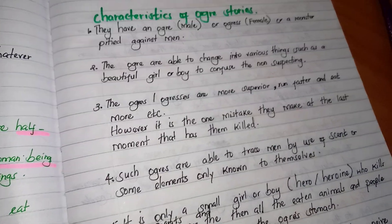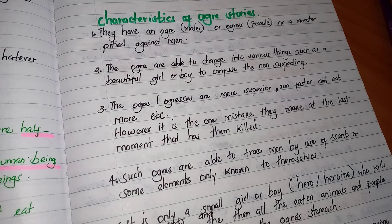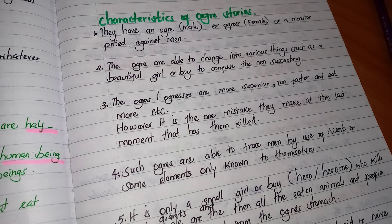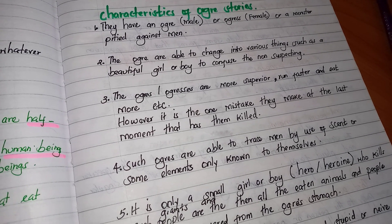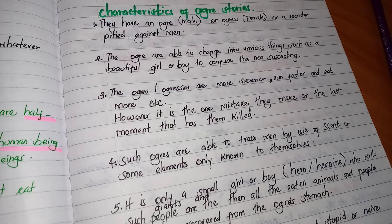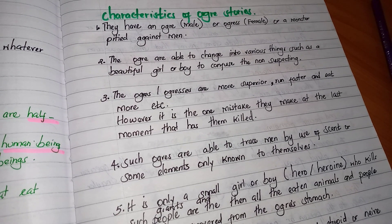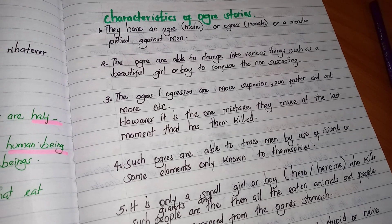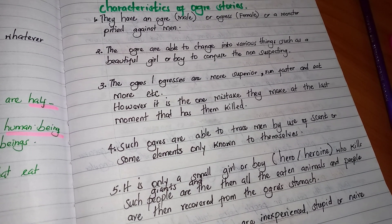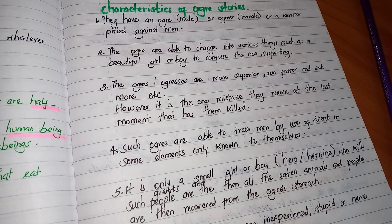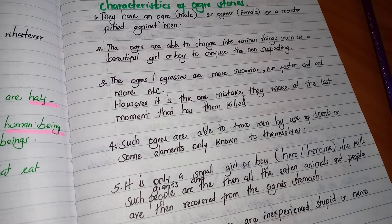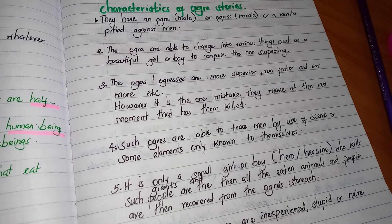Let us look at the characteristics of ogre stories. They have an ogre, which is the male, and an ogress, which is the female, or a monster, pitted against men. The ogres are able to change into various things such as a beautiful girl, a beautiful boy, or a handsome boy, to confuse the unsuspecting. The ogres are more superior, they run fast and eat more. However, it is the one mistake they make at the last moment that has killed them.